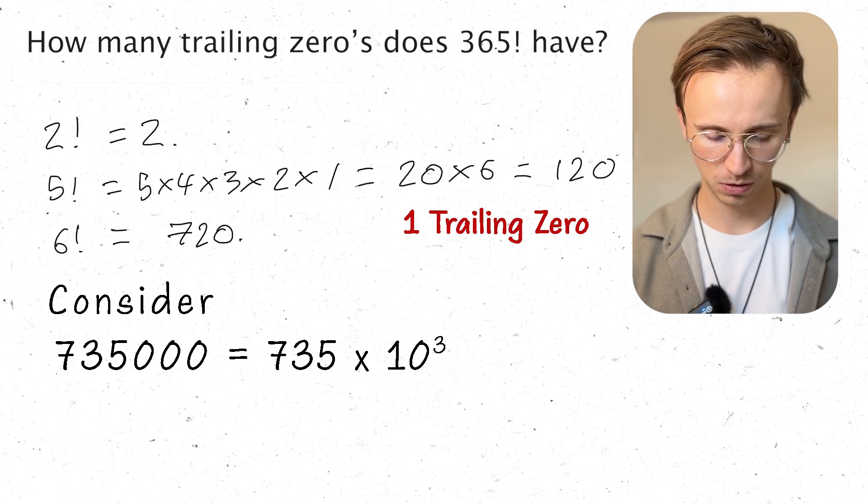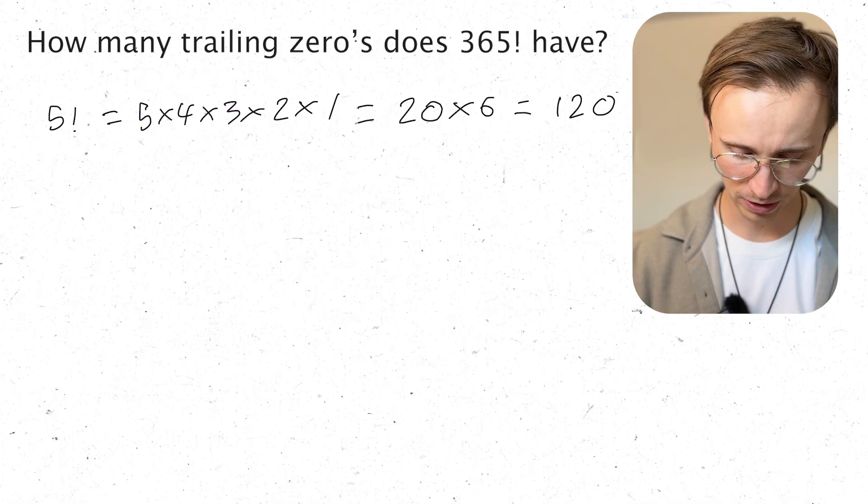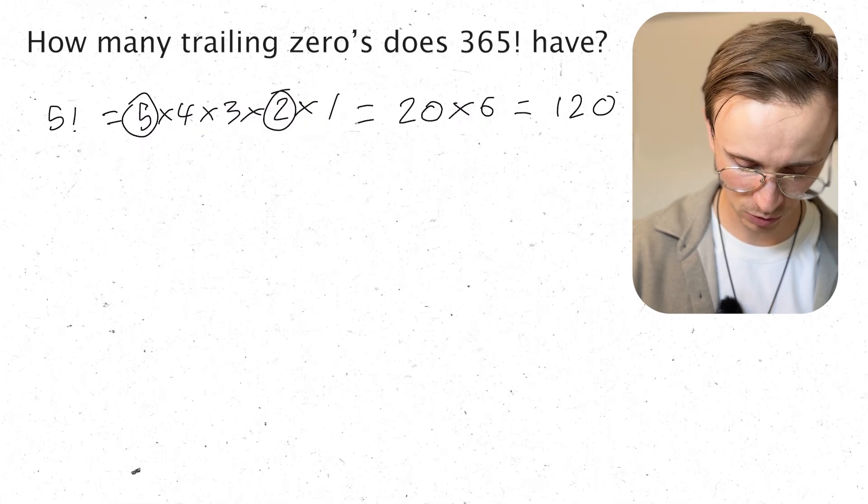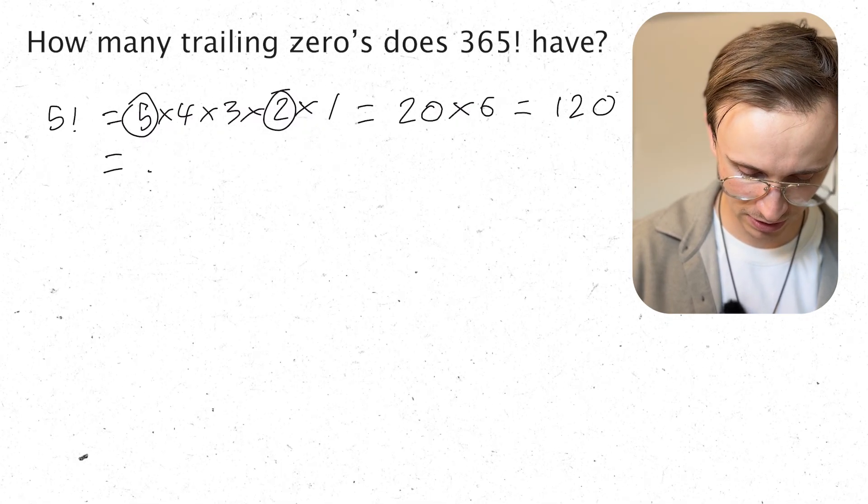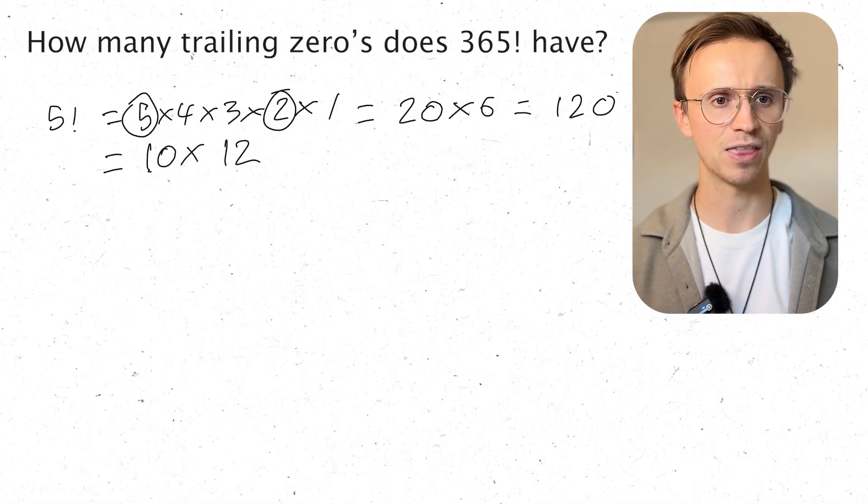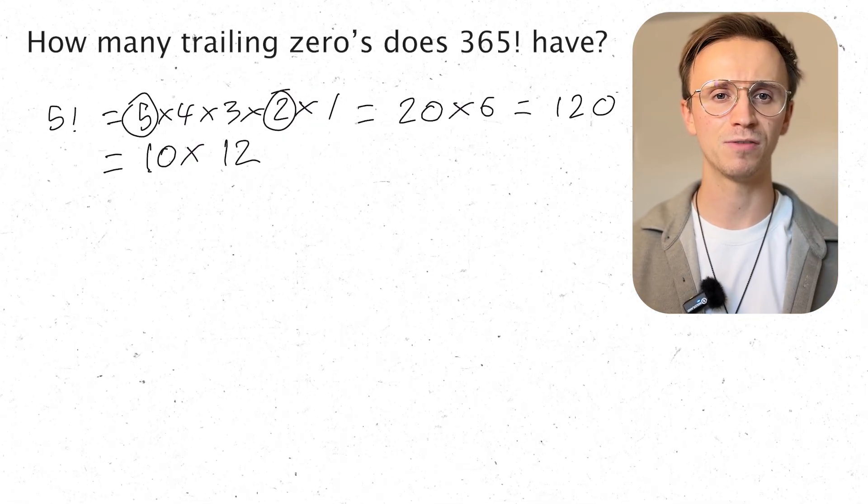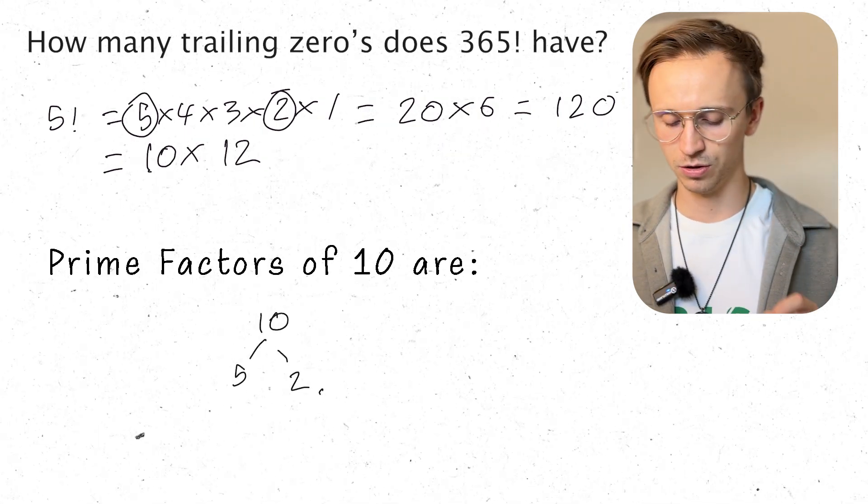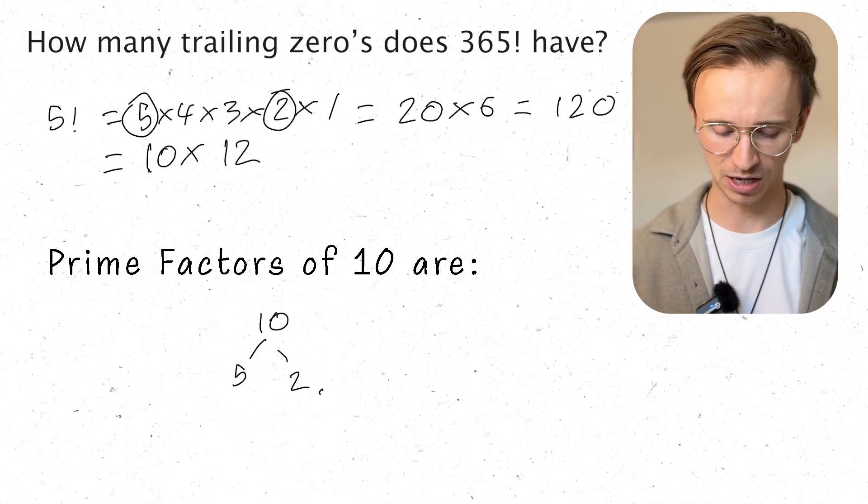So I should be able to take out factors of 10. If I go back to my example of 5 factorial, well here I can see that the 5 and the 2 make a 10. So that's where my 10 is coming from. So instead I could rewrite this as 10 times by 12. And then I can see that I've got that factor of 10. So it seems that the factors of 10, the trailing 0s come from the 5 times a 2, because that's the only way to make a 10. The prime factors are 5 and a 2.